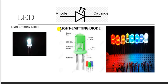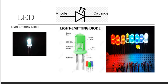The next component is the LED — Light Emitting Diode. The longer terminal is the anode (positive) and the shorter terminal is the cathode (negative). If both terminals are the same length, the positive terminal has a peaked edge and the negative terminal has a flat edge. LEDs are available in different colors.